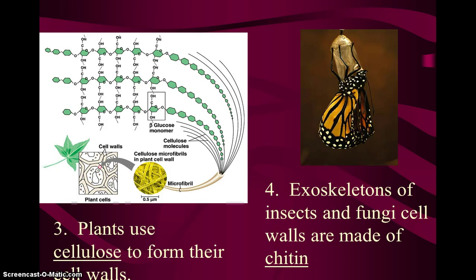A brief rundown one more time: carbohydrates provide quick energy, and we get them from fruits, vegetables, and grains like pastas and breads. There are three categories: monosaccharides (one sugar unit), disaccharides (two sugars), and polysaccharides (three or more). We combine multiple monosaccharides through dehydration synthesis to form bonds and make them bigger. We can break down polysaccharides into individual units by adding water back in through hydrolysis.